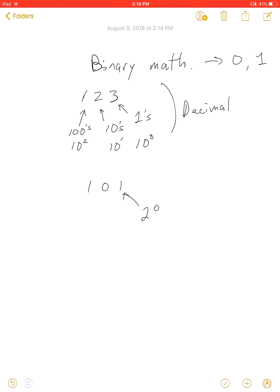This first one would represent 2 to the zero, which is 1. The second one would represent 2 to the first, which is 2. The third represents 2 squared, which is 4. So in decimal values, this would equal 5 in base 10.